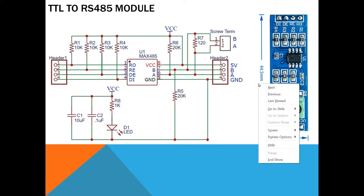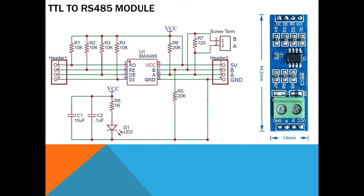This is the construction of the module. The main chip is the MAX485. This chip connects to an MCU using four pins: Receiver Output (RO), Receiver Enable (RE), Driver Enable (DE), and Driver Input (DI). From the other side we supply VCC and ground, and also pins A and B — the two wires that connect to another module to transmit and receive data.